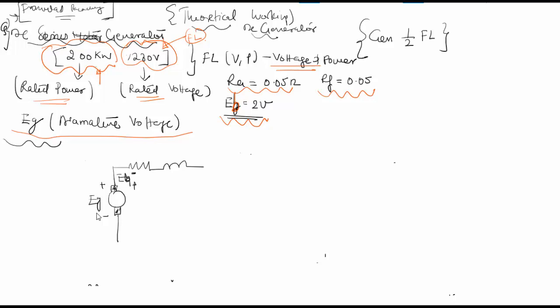It's possible to show this as EB voltage. This is the voltage available across the terminal, which equals 230 volts. RA equals 0.05 ohm and RF equals 0.05 ohm. This is the EG voltage which is generated.